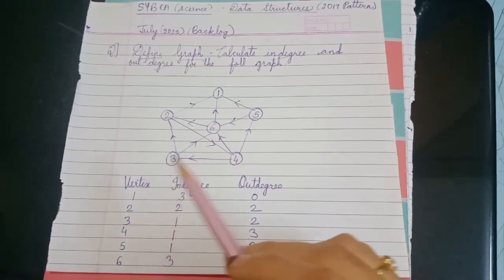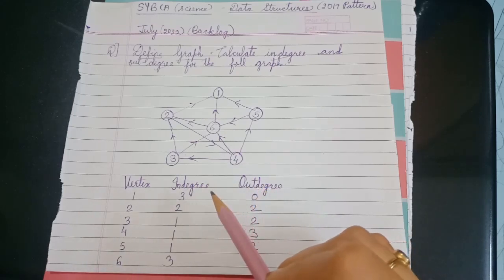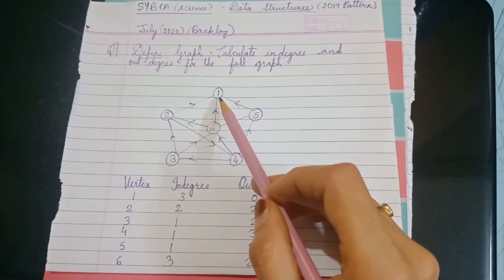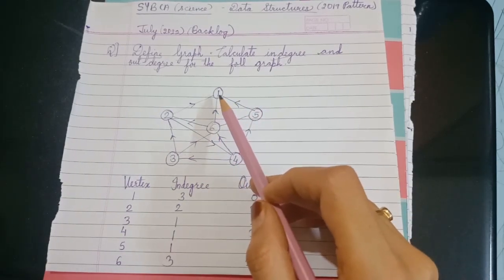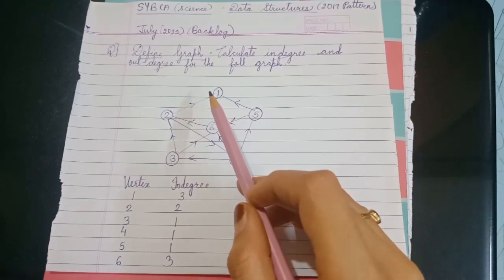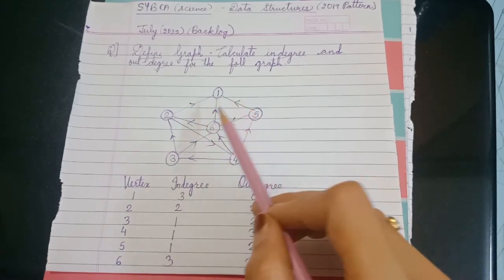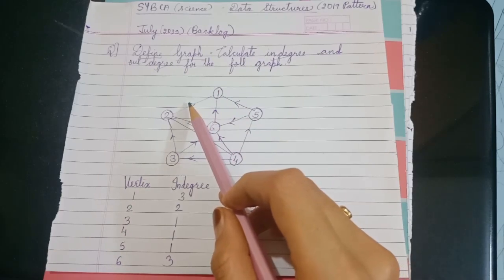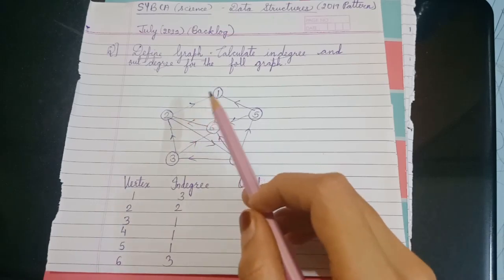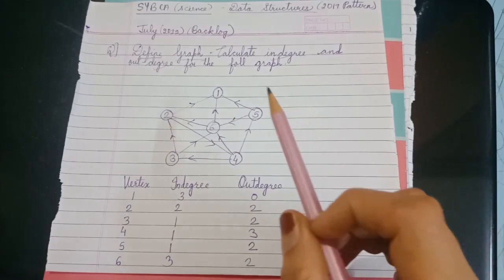Now to calculate in-degree and out-degree, let's understand the concept. Let's consider vertex one. For vertex one, there are three edges, and edges have arrows — that is, directions. The direction coming towards the vertex is called in-degree, and the direction going out from the vertex is called out-degree.